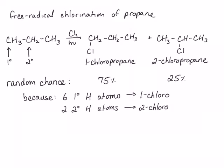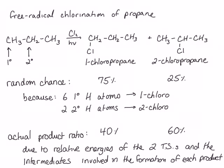However, when we run this reaction in the lab, the actual ratio we get is 60% of the 2-chloropropane and only 40% of the 1-chloropropane. In order to understand the actual product ratio, we have to understand the mechanism of this reaction, because the product ratios have to do with the relative energies of the transition state and the intermediates involved in the formation of each product.